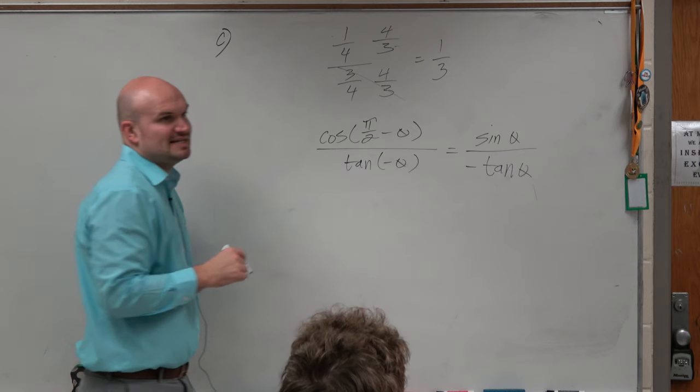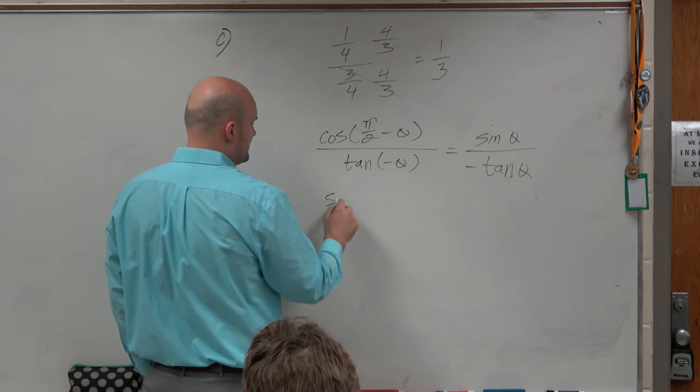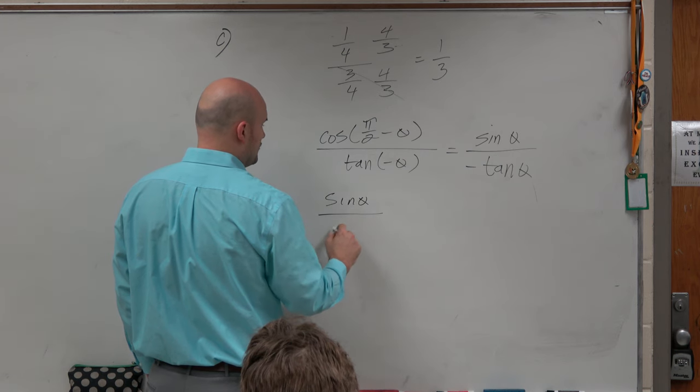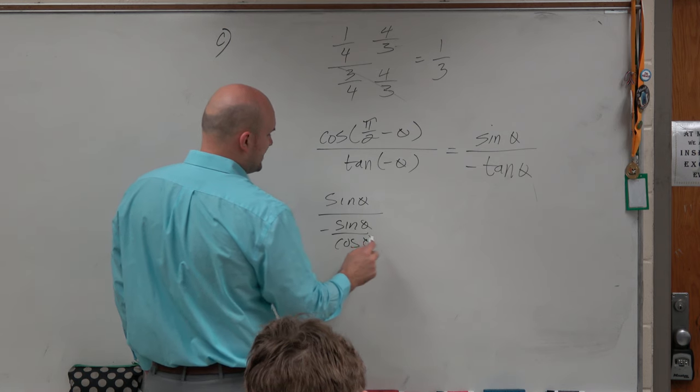So now let's go ahead and rewrite tangent in terms of sines and cosines, see if that helps us out. So I can rewrite this as sine of theta over negative sine of theta over cosine of theta.